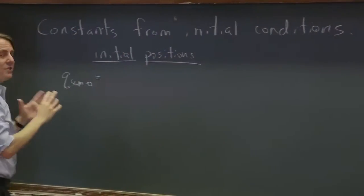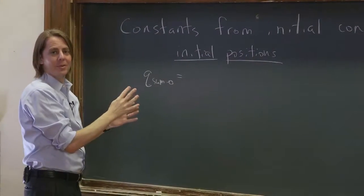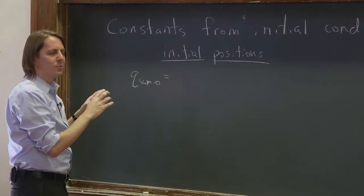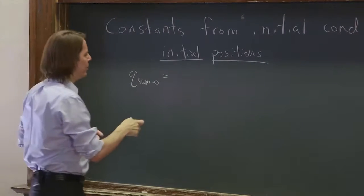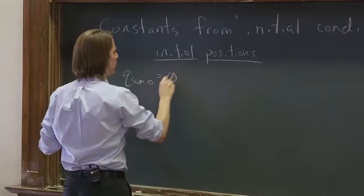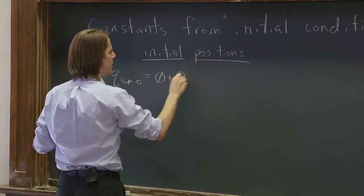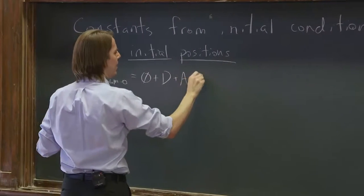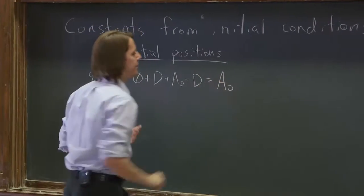So there's nothing sitting at the exact position A_0. But this isn't the initial position of an actual mass. It's the initial position of the normal coordinate. So it's 0 plus d plus A_0 minus d, which equals A_0.